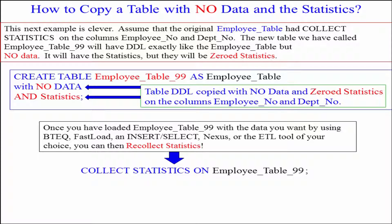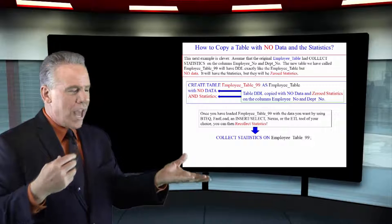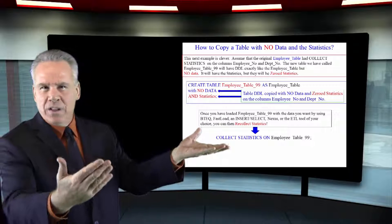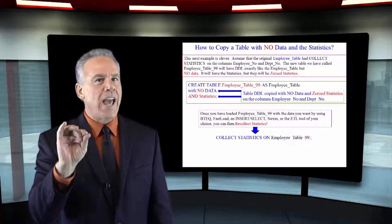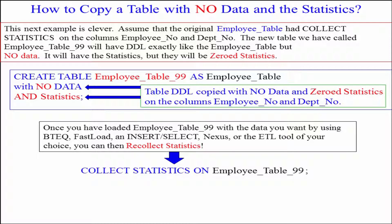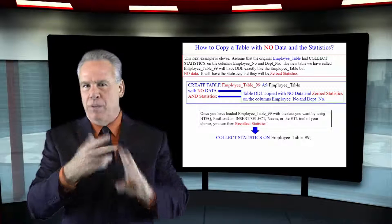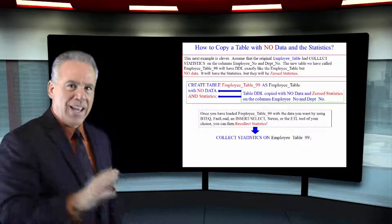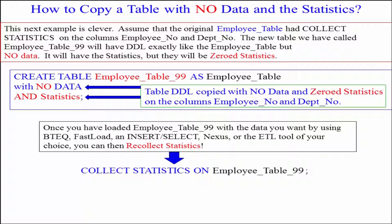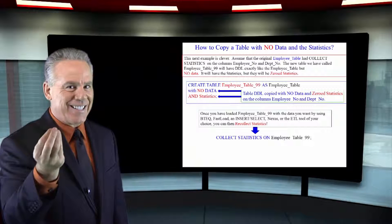Now this is interesting because you say, wait a minute, this other table might have had a billion rows. We've got a copy of the table structure but we don't have any data in it, and you want me to bring the statistics? Won't Teradata be confused and say there's a billion rows here? They will not. It's going to have what are called zeroed statistics. In our other table that had a billion rows, we collected statistics on first name, last name, and employee number. When we bring the zeroed statistics over, it's going to say: don't act like there's a billion rows in this table, but if they ever say collect statistics again, do it on first name, last name, and employee number. That's what zeroed statistics are about.